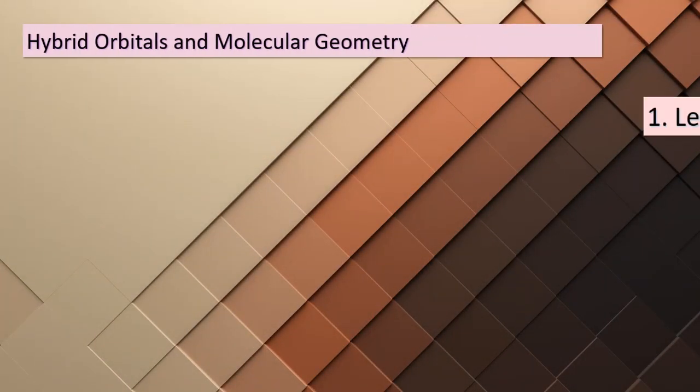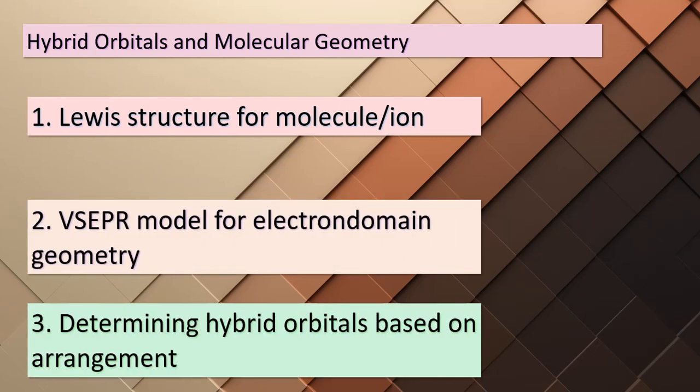Today we're delving into the world of molecular bonding and the concept of hybrid orbitals. We'll follow a systematic approach. Our journey begins with Step 1: drawing the Lewis structure for the molecule or ion. This structure provides us with a visual representation of the atom's valence electrons and their bonding arrangement.